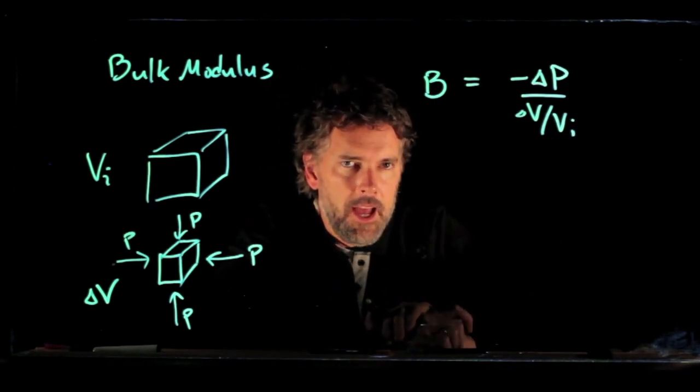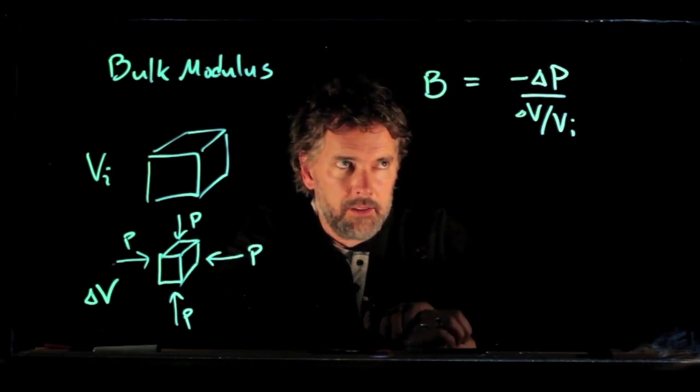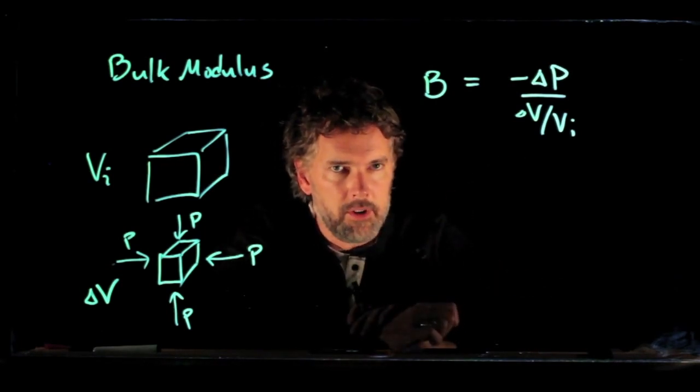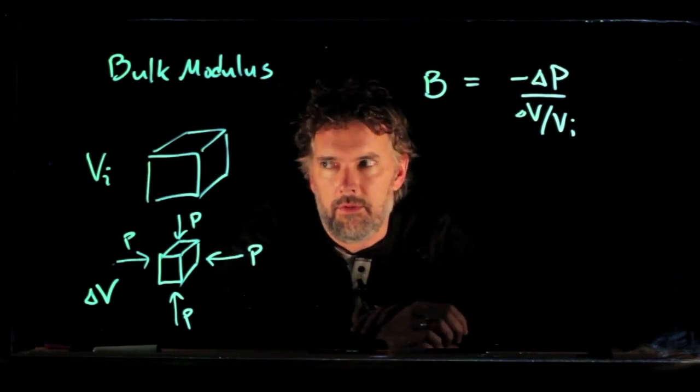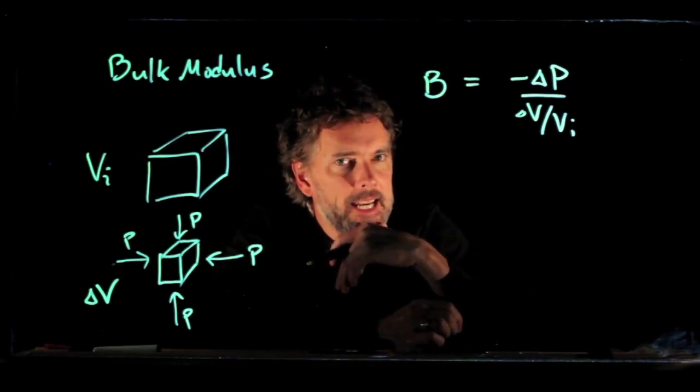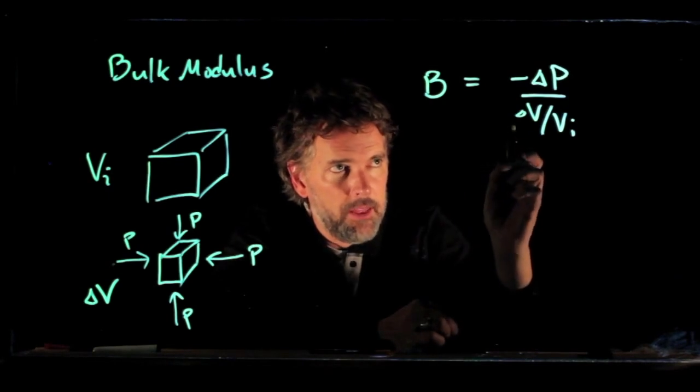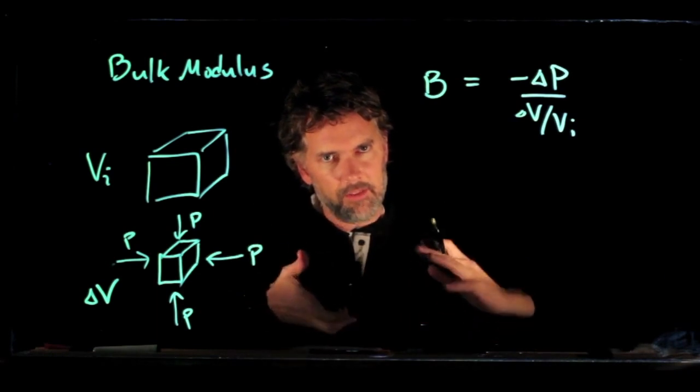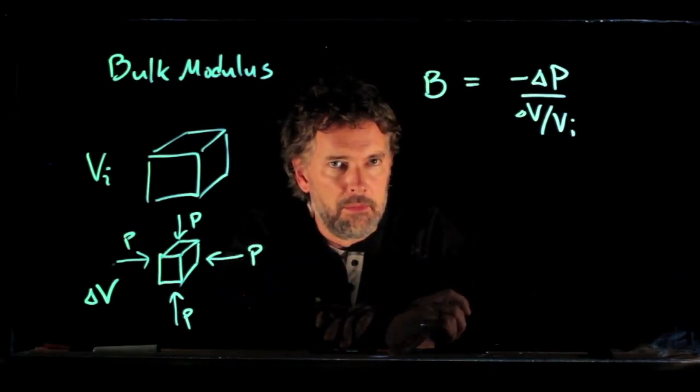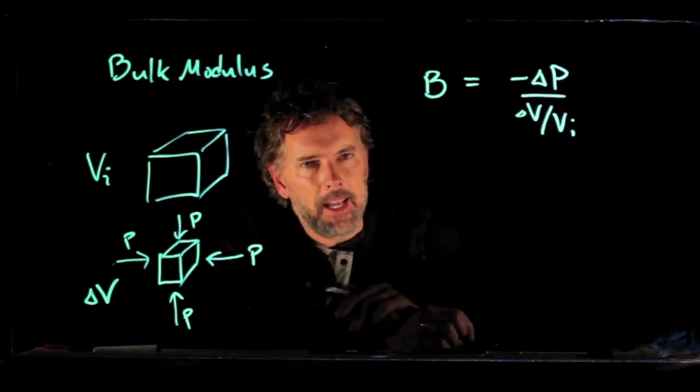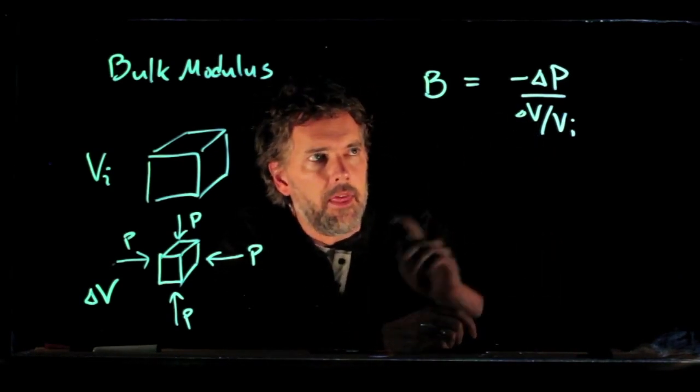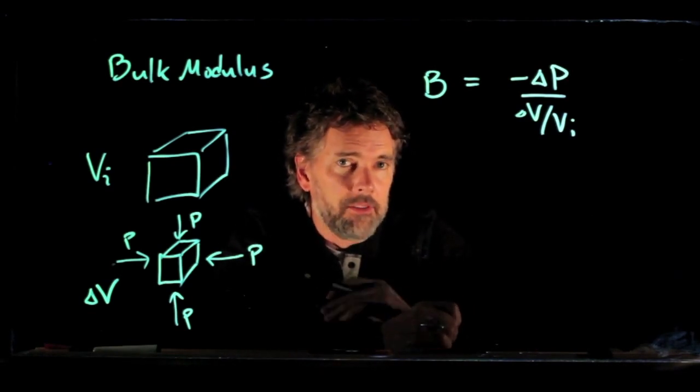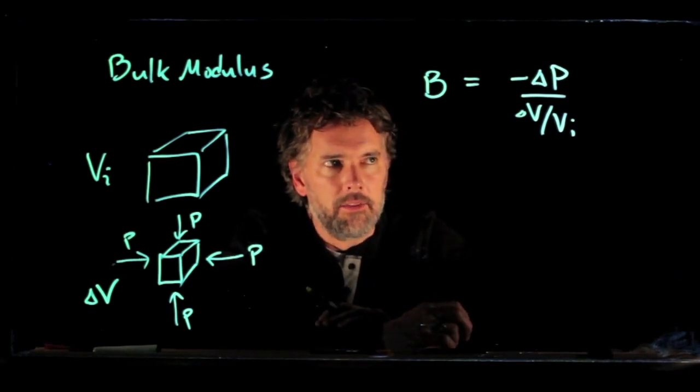This is again stress over strain. Okay, the stress is the ΔP. The strain is the change in the volume divided by the initial volume. Now what about this negative sign? The reason that we have a negative sign there is because we know the volume is going to go down. When you start to compress this thing from all sides, the volume gets smaller and so you end up with a negative number down here, and that cancels with that negative sign up there. Your ΔP is of course positive. You have increased the pressure on the outside of this thing.